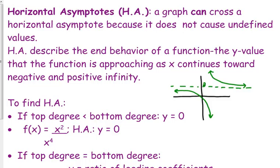You can cross a horizontal asymptote because what it actually describes is the end behavior. That means the y value that your function is approaching as you are going towards either positive infinity or as your x's are going to negative infinity. This is just an example of a sketch.